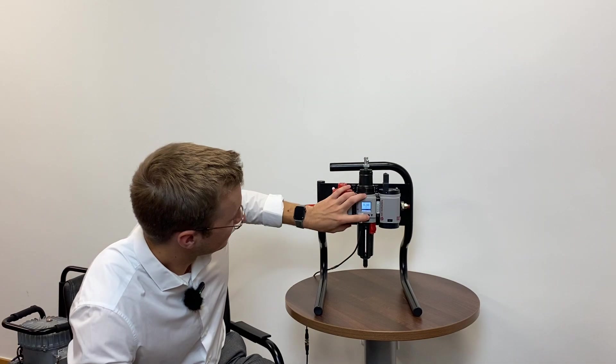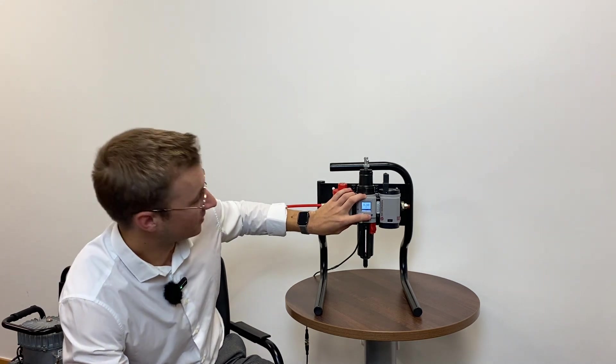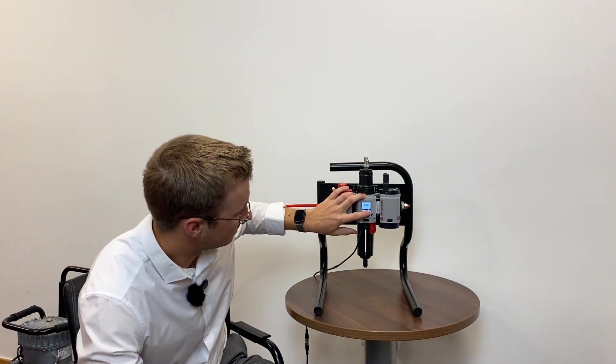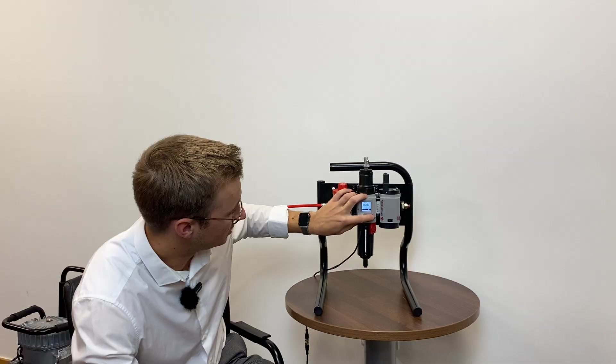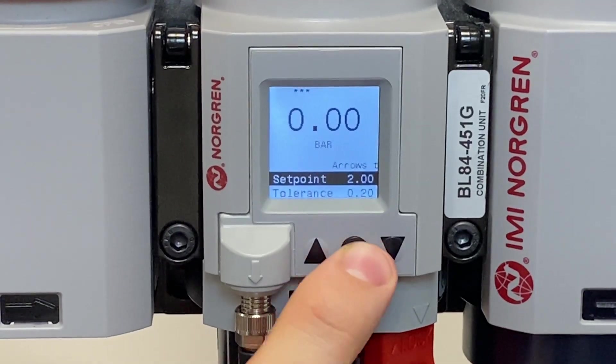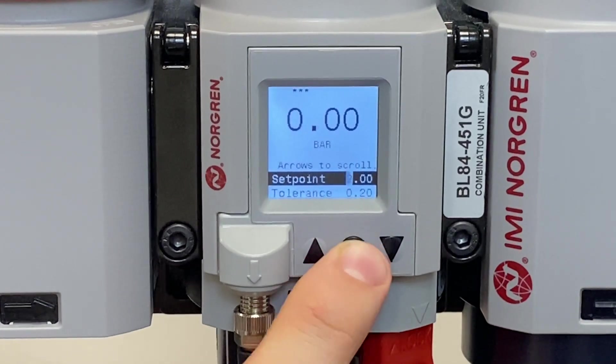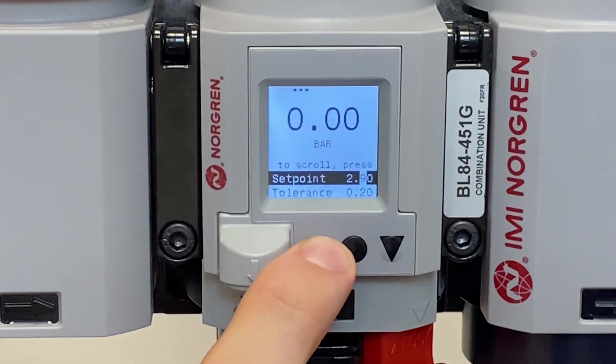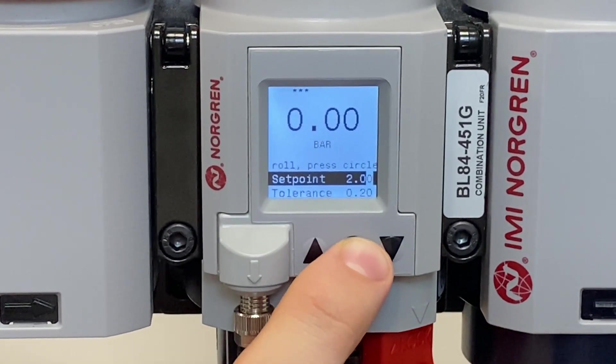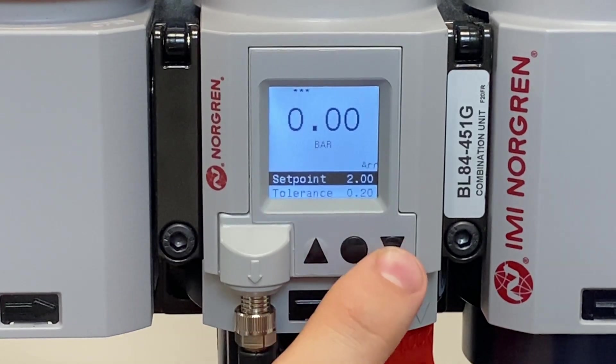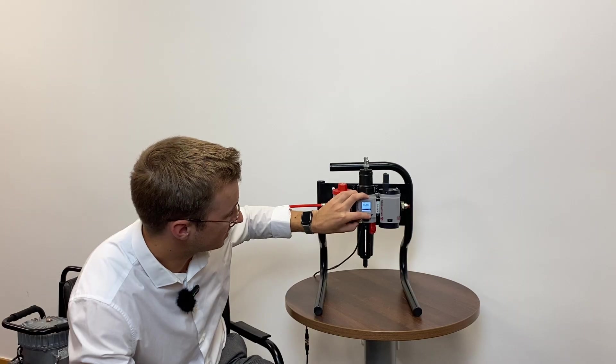If you then short press on the set point, this first digit here flashes up and you can then use the up or down arrow to alter the pressure. So we can change from 3 bar to 2 bar. If you then single press again, you can get into your tenths, and a single press again into your hundredths of bar. Then if you long press there, that's going to lock that in.